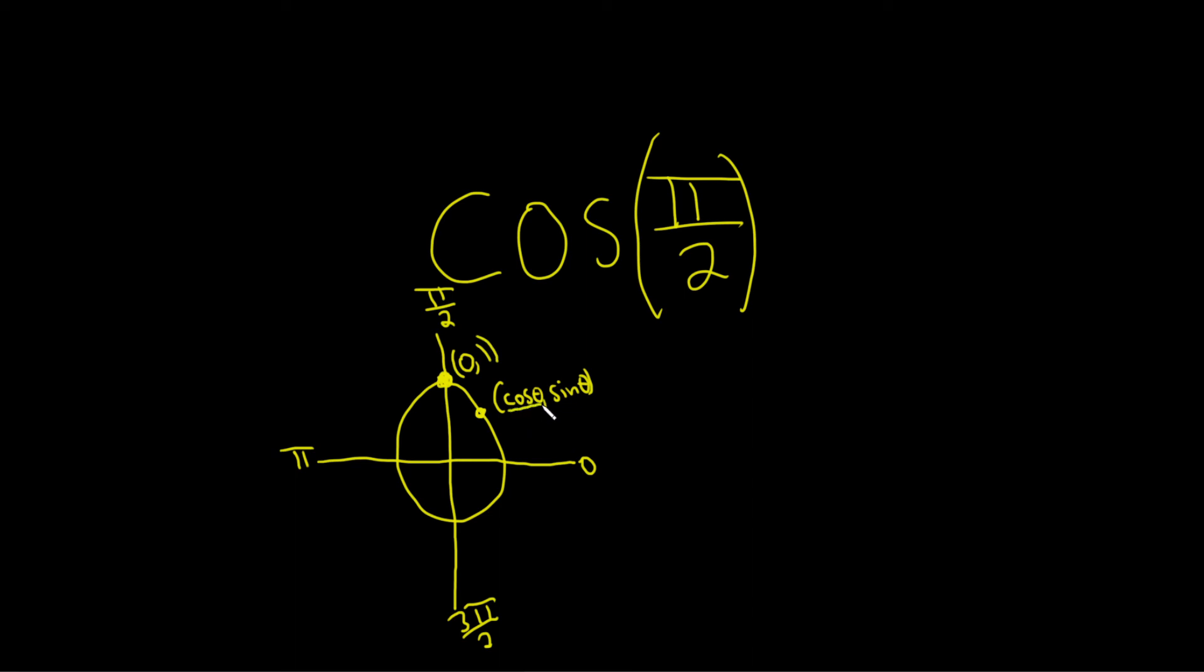So this means that the cosine of pi over 2 is equal to the x-coordinate here, which is 0. Just a quick way to come up with it if you ever forget. I hope this video has been helpful.